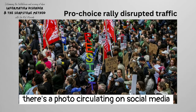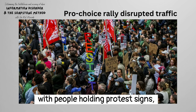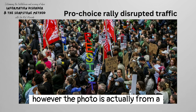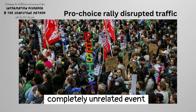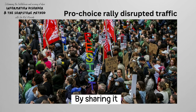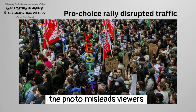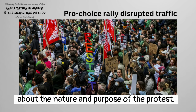For example, there's a photo circulating on social media showing a crowded street with people holding protest signs. However, the photo is actually from a completely unrelated event that took place several years ago. By sharing it in the current context, the photo misleads viewers about the nature and purpose of the protest.